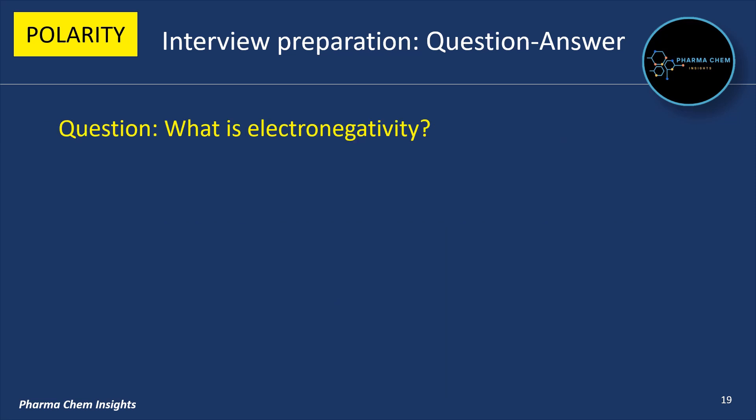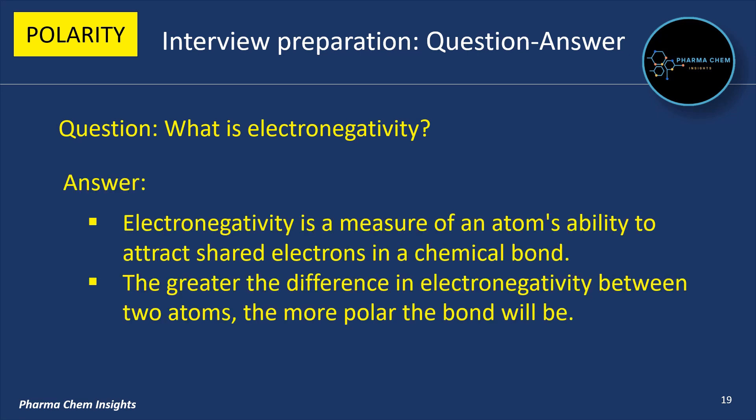Next question: what is electronegativity? Answer: electronegativity is a measure of an atom's ability to attract shared electrons in a chemical bond. The greater the difference in electronegativity between two atoms, the more polar the bond will be.